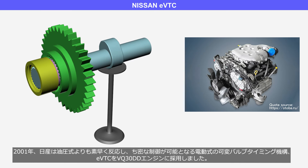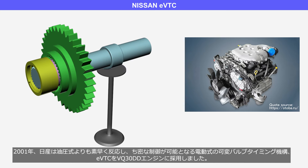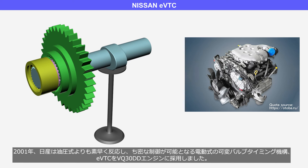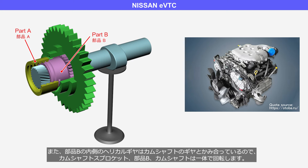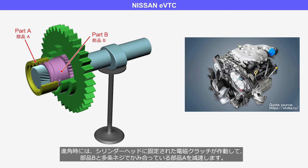In 2001, Nissan adopted the Electrically Controlled Variable Valve Timing Mechanism, EVTC, for the VQ30DD engine, which allows for quicker response and precise control compared to hydraulic systems. The inner gear of the camshaft sprocket engages with the outer gear of part B. Additionally, the inner helical gear of part B engages with the gear of the camshaft, causing the camshaft sprocket, part B, and camshaft to rotate as a single unit. When the valve timing is advanced, an electromagnetic clutch fixed to the cylinder head activates and applies a brake to part A, which is engaged to part B through a screw gear.